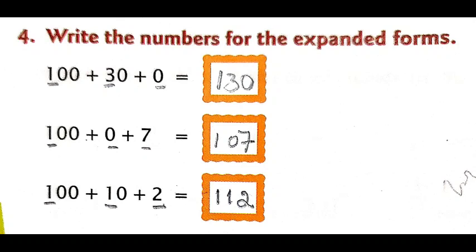And the last one: 100 plus 10 plus 2. In 100, underline 1. In 10, underline 1. And 2, underline 2. So we get 1, 1, 2 — that is 112. Did you understand children? Very good. Here are a few worksheets. Write down in your rough book one by one, neatly, and solve the sums children.